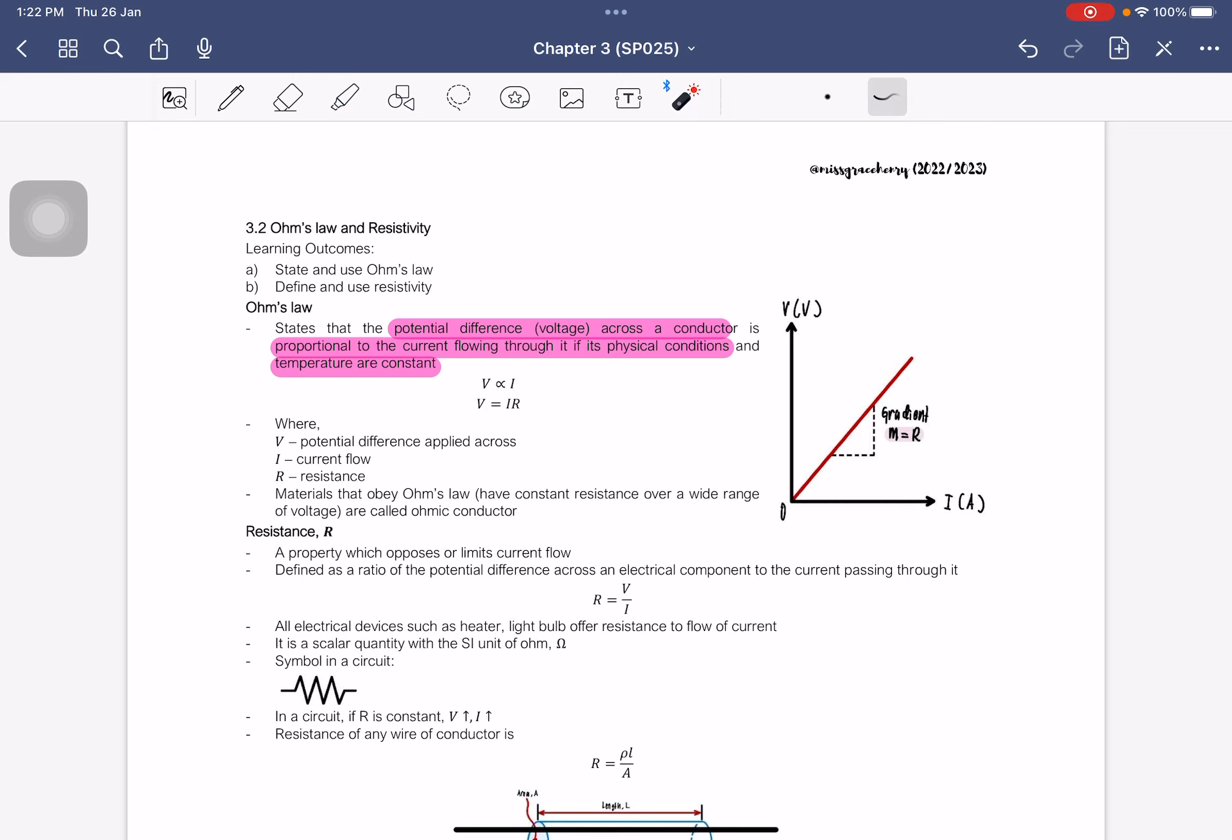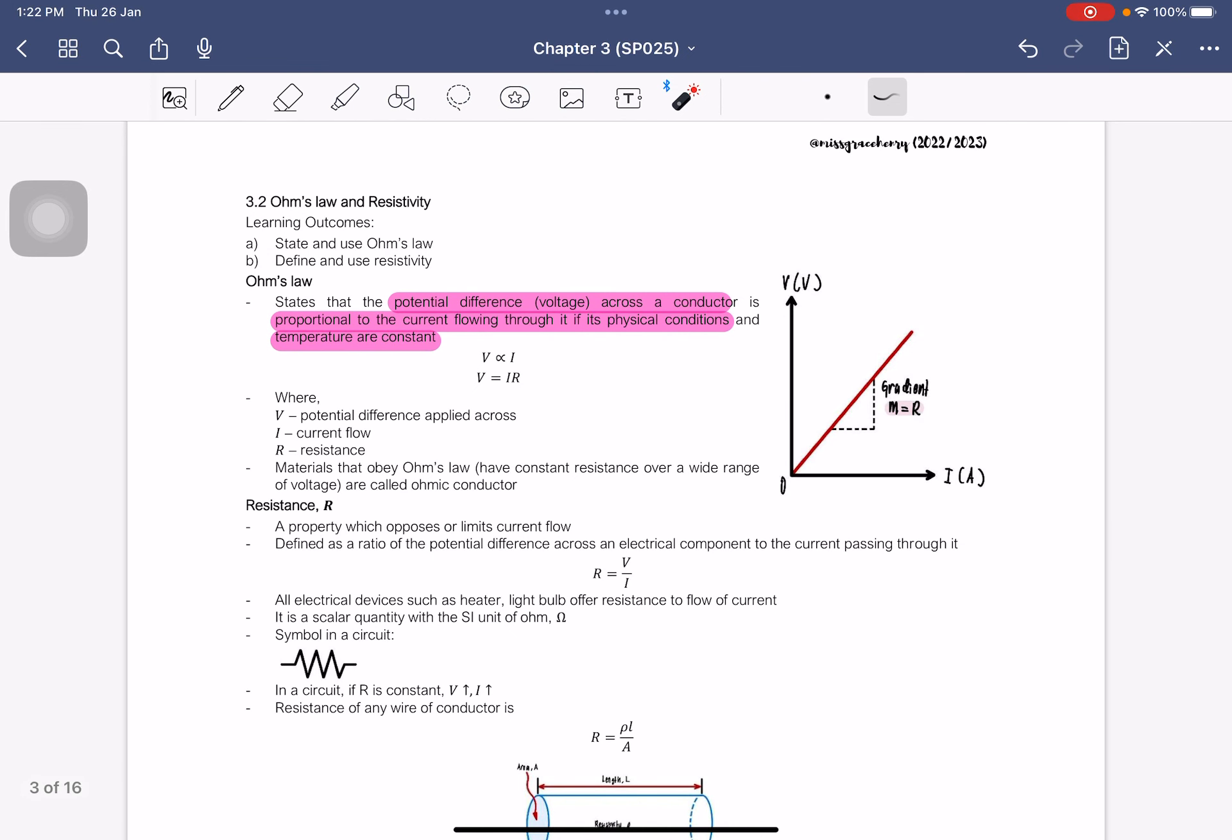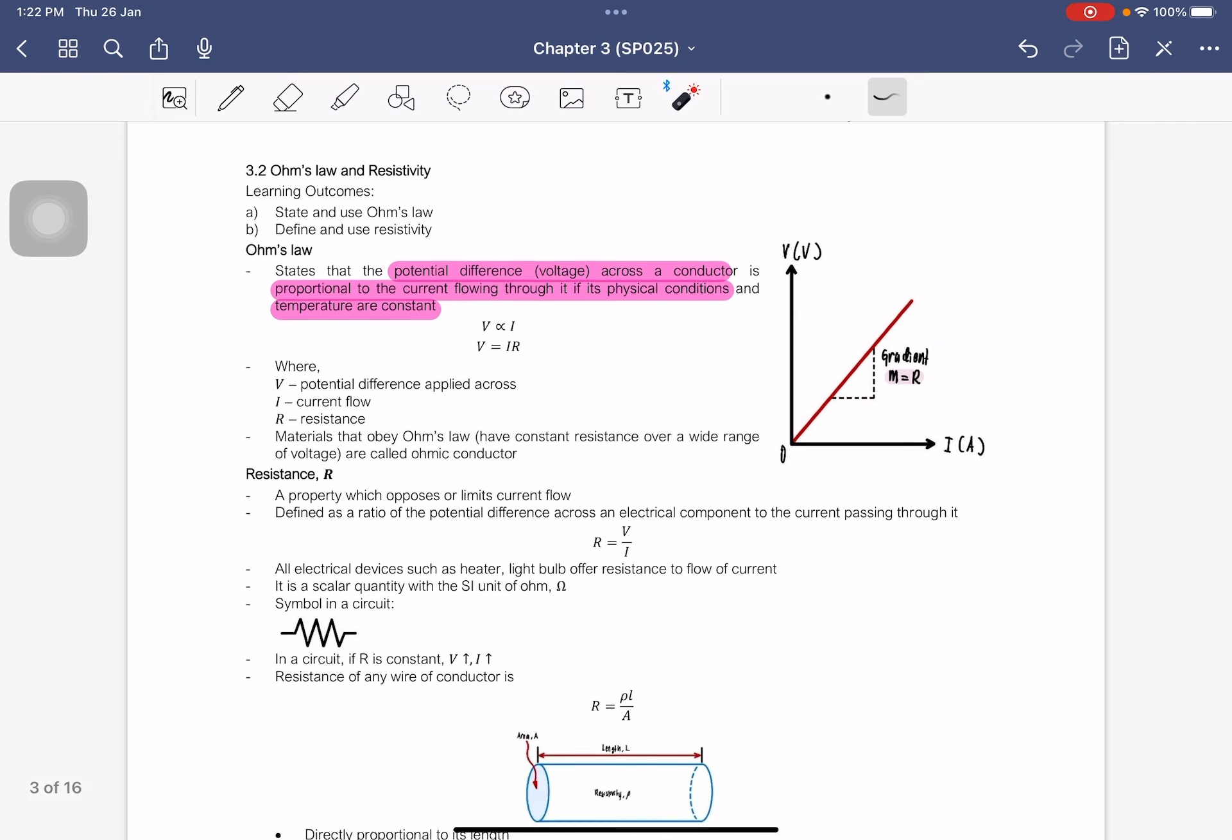So this is also the graph that you've drawn for experiment two. So theoretically, you should be obtaining a graph that is like this. So the gradient of this graph will be telling you the resistance value. So for your experiment two, they will tell you effective resistance. So V is potential difference, I is current, R is resistance.